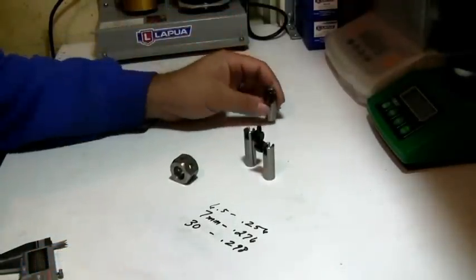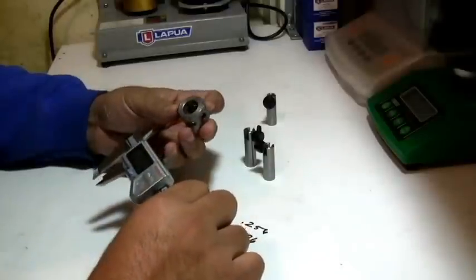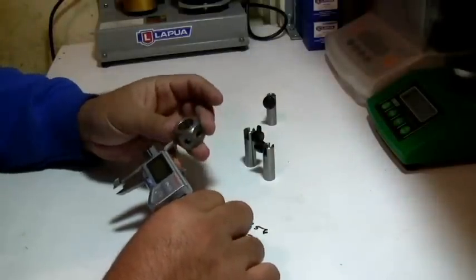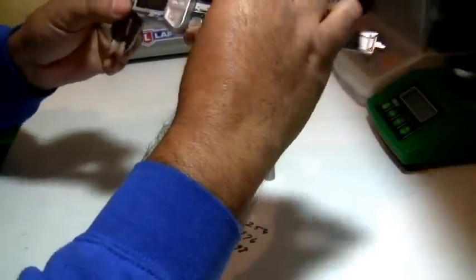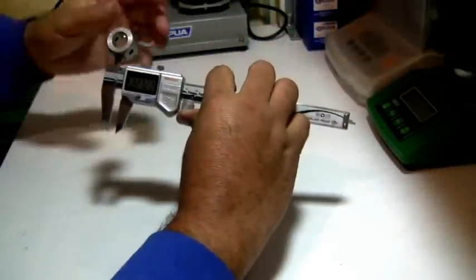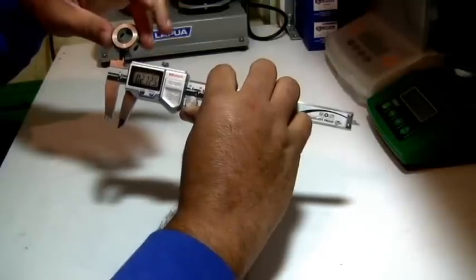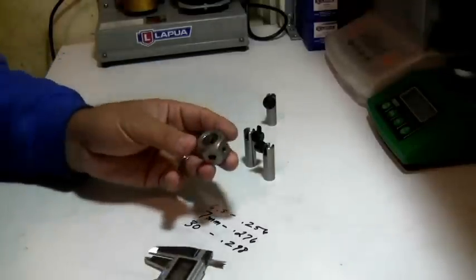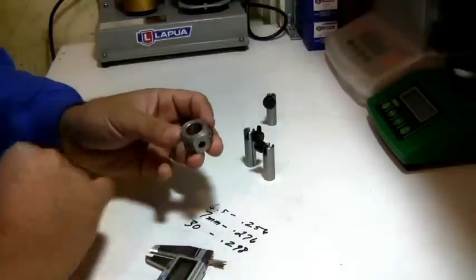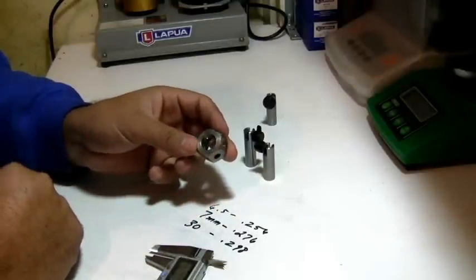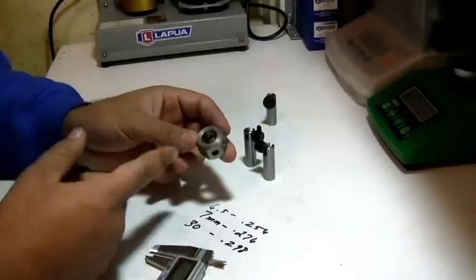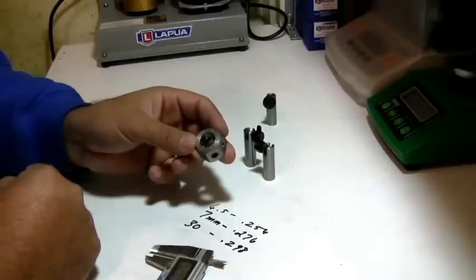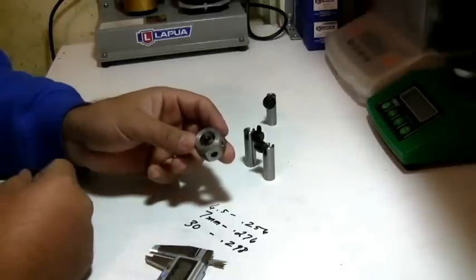Now let's measure the Sinclair tool at 7 millimeter. We measure it, it measures 272 and a half. So 272, that means it's six thousandths smaller than the bore of the barrel.